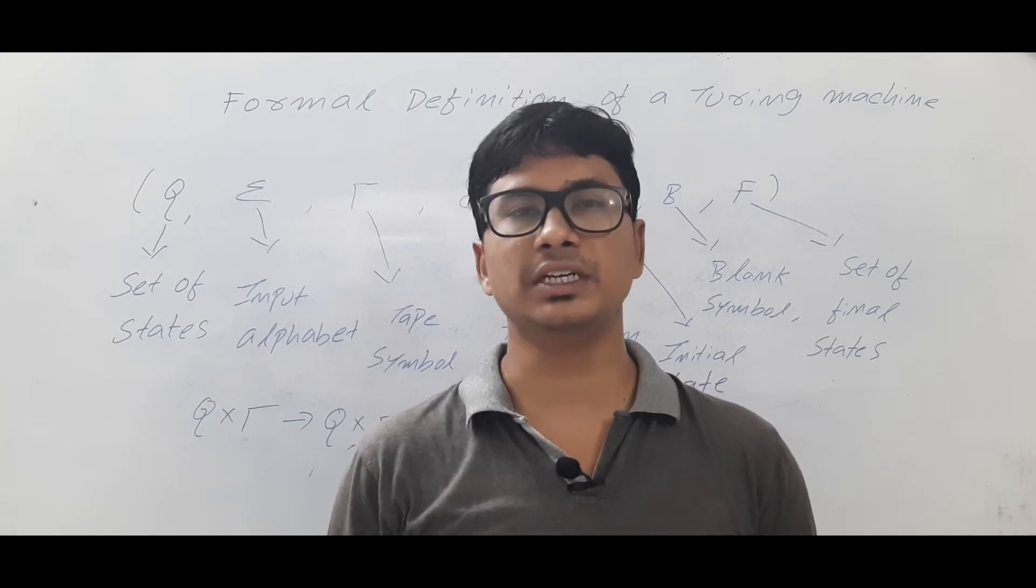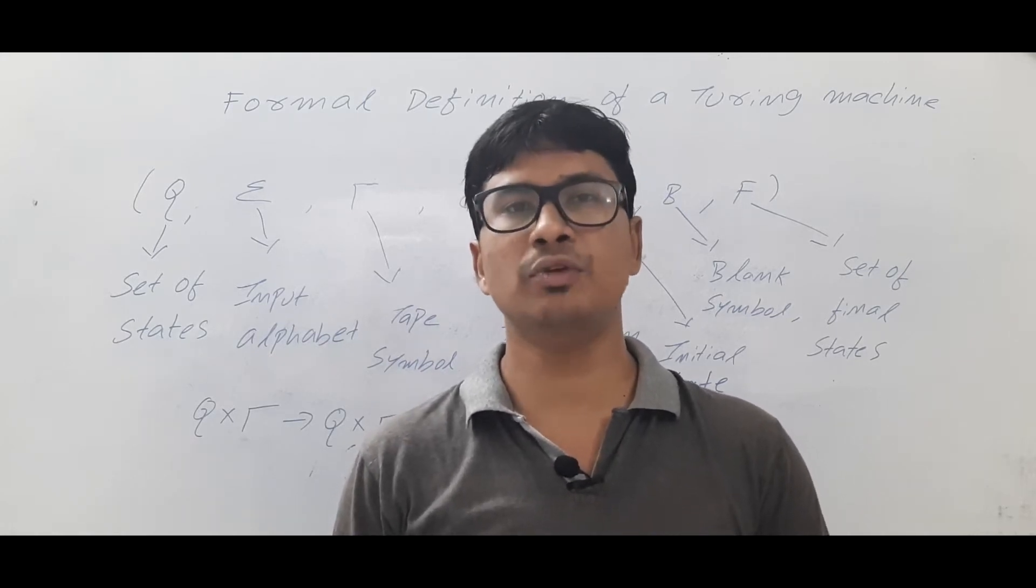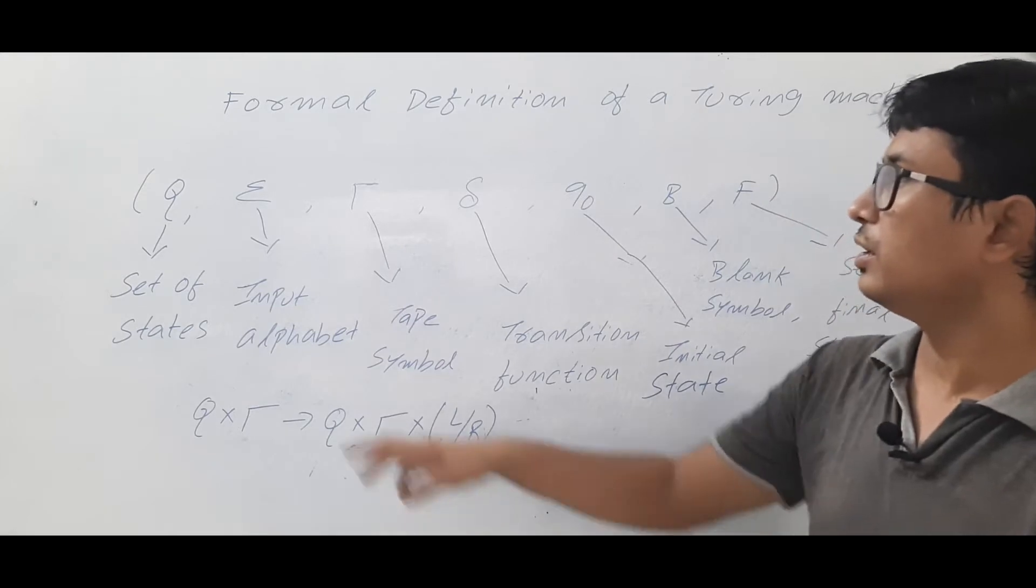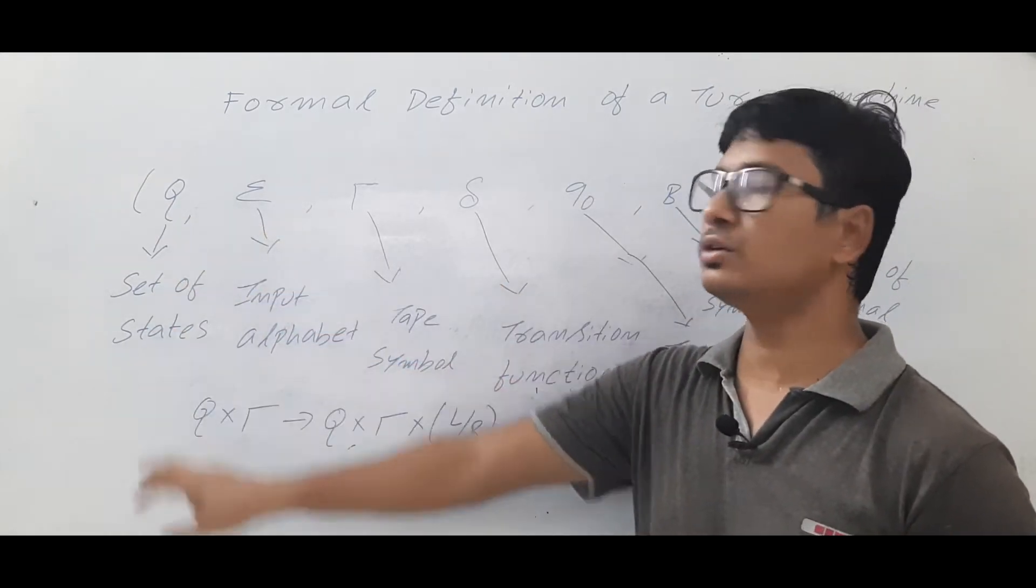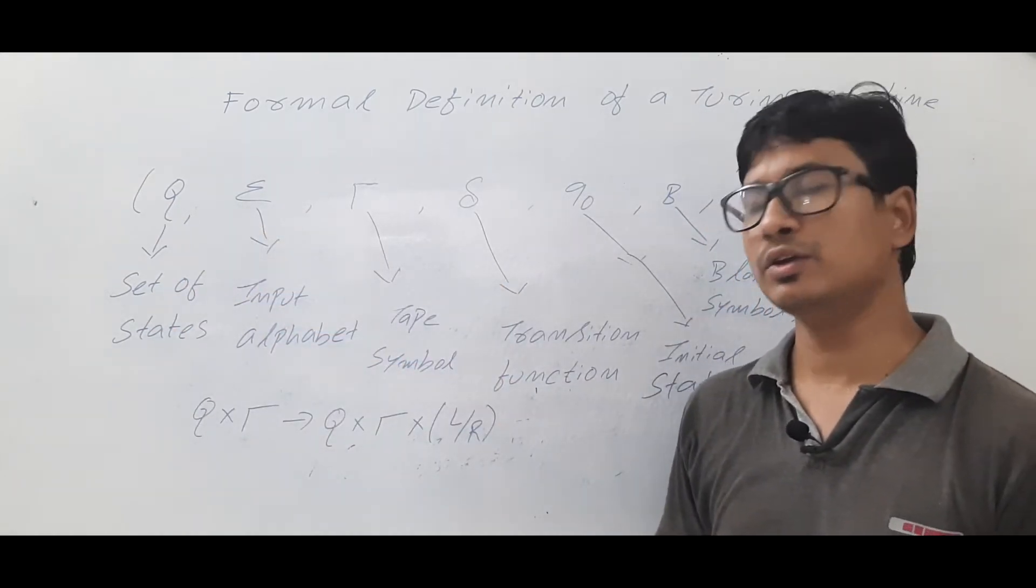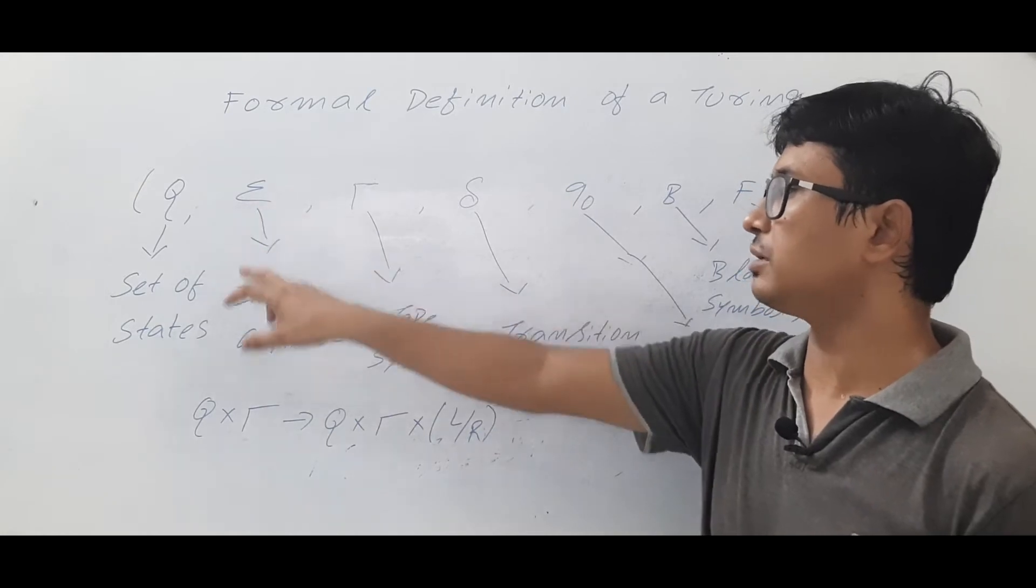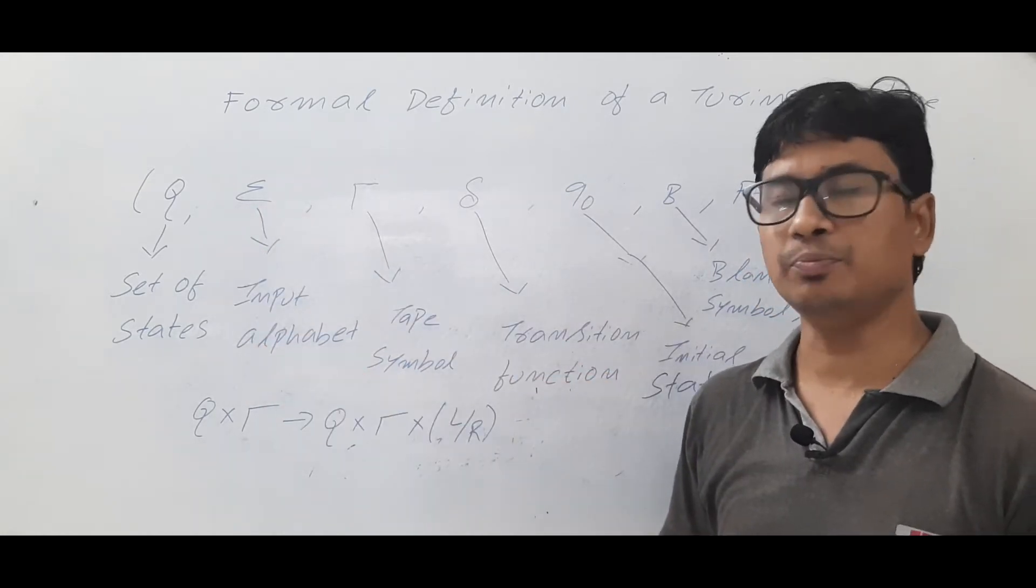Any Turing machine can be represented using seven tuples. We have Q, which denotes the set of states in a Turing machine. You have sigma, which consists of the input alphabets.